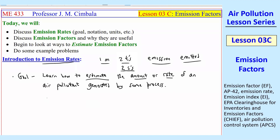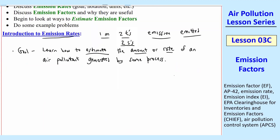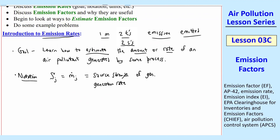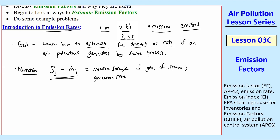The goal is to learn how to estimate the amount or rate of an air pollutant generated by some process. We'll talk about a bunch of different processes. I want to mention some notation first. We'll use S_J and M-dot_J to mean the same thing — this is called the source strength or generation rate of some species J. Sometimes we'll drop the J subscript, especially when we're typically only talking about one type of air pollutant.